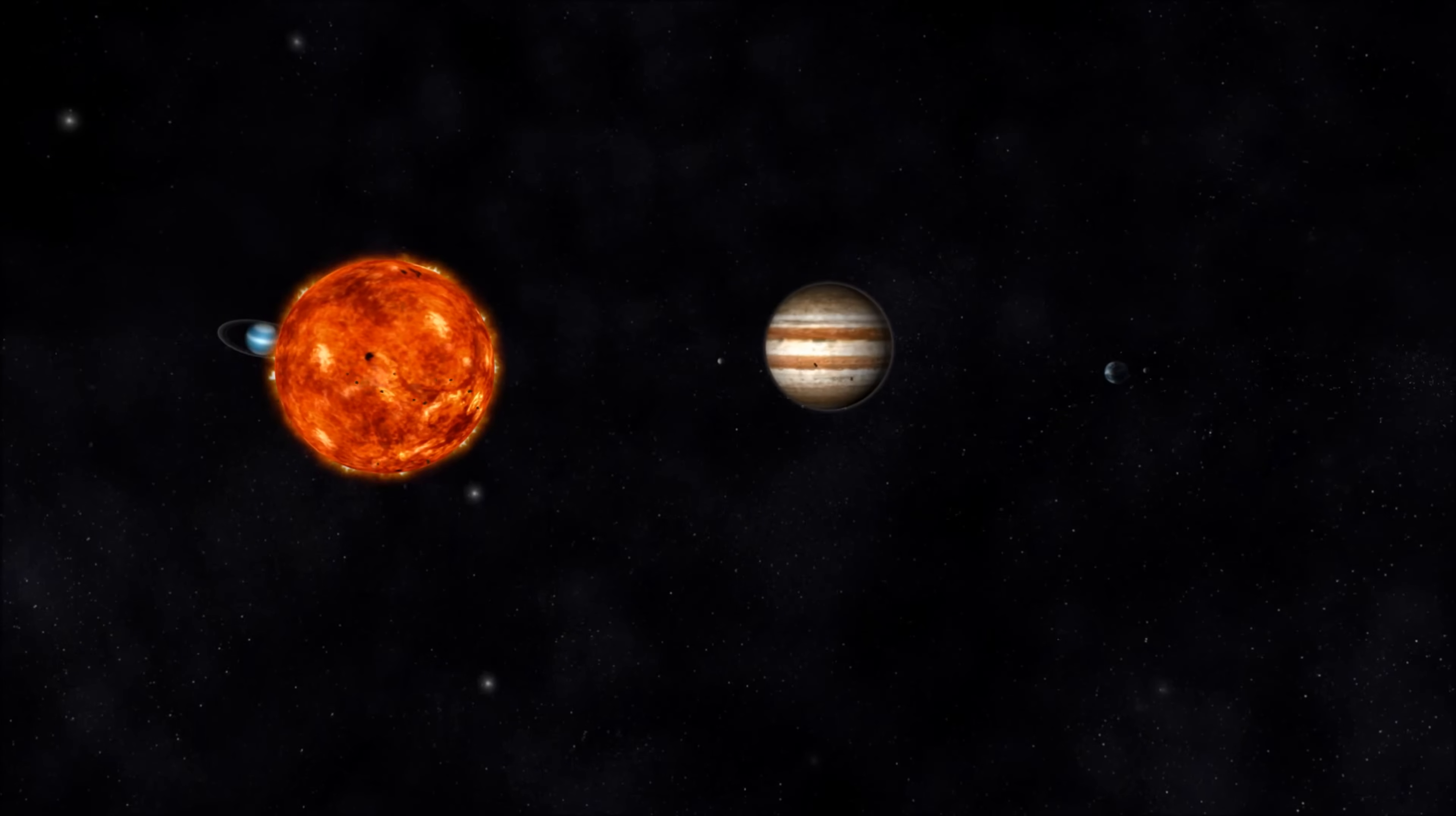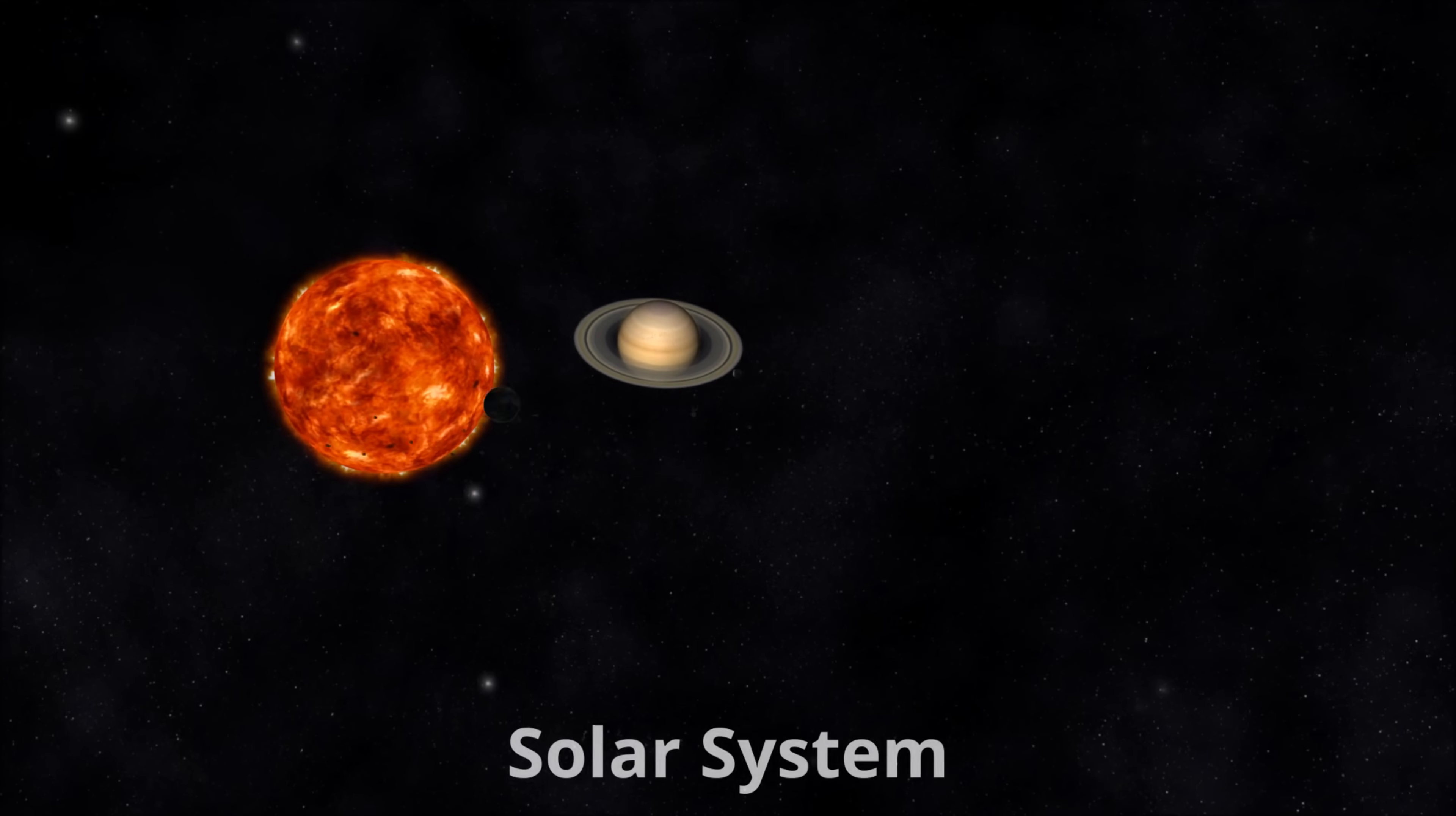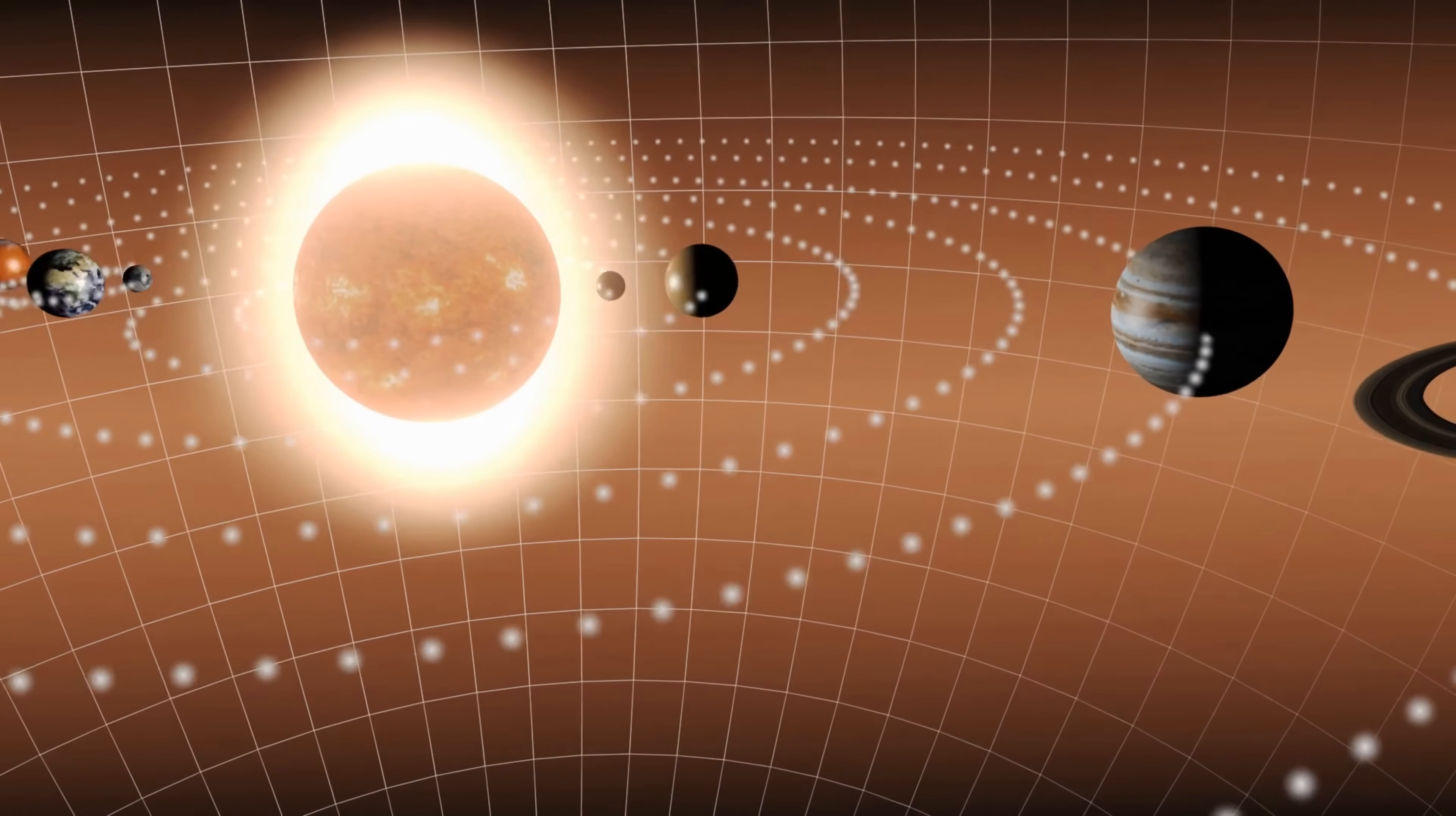All planetary systems have a star at the center and a collection of planets and other small objects that orbit around it. We call the planetary system that we are part of our solar system. The shape of Earth's solar system looks a lot like a bullseye target. The sun is in the bullseye at the center and the orbits of the eight planets are similar to the rings around it.